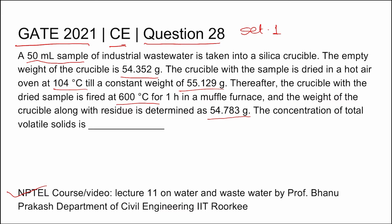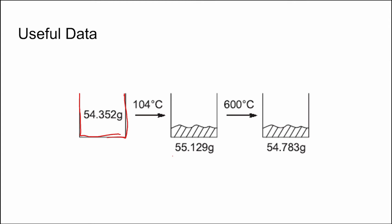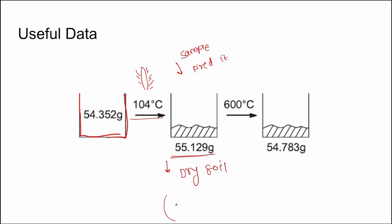They put a sample and fired it at this temperature — I'll draw a symbol of burning — and the weight remaining is 55.129 grams. We know this 55.129 grams is dry soil with zero moisture content, because all moisture has evaporated.